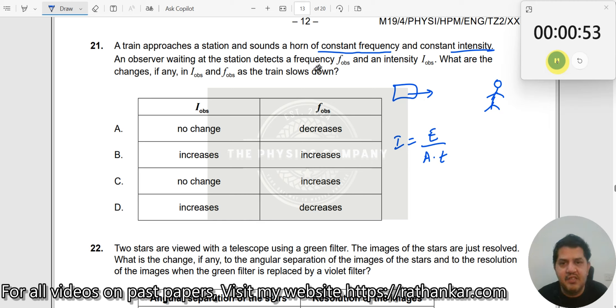An observer waiting at the station detects a frequency F observed. This is your F observed. He gets over here. And intensity I observed. What are the changes if any in I observed and F observed as the train slows down? As the train slows down, what is the difference in them?